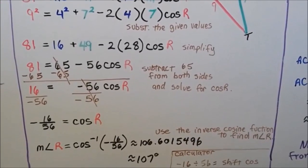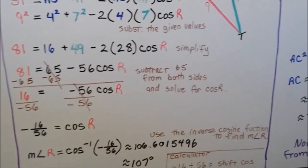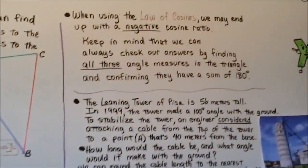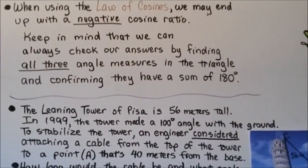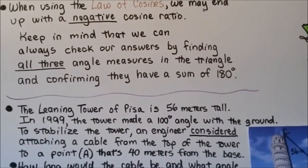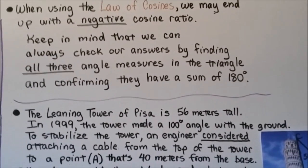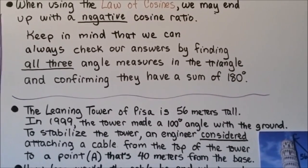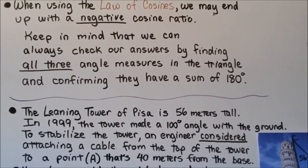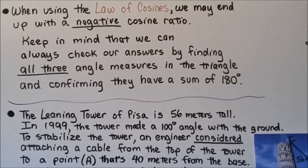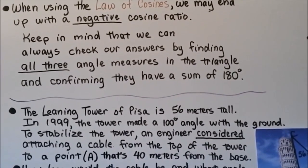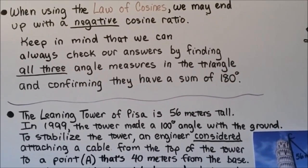Remember to hit the shift button to use the inverse function. When using the law of cosines, we may end up with a negative cosine ratio. Keep in mind that we can always check our answers by finding all three angle measures in the triangle and confirming they have a sum of 180 degrees.